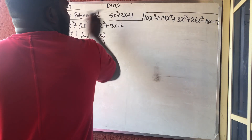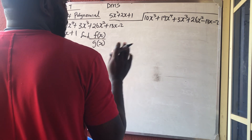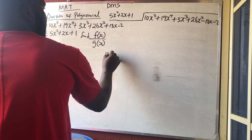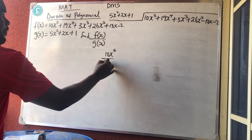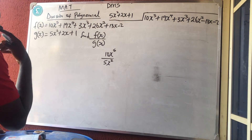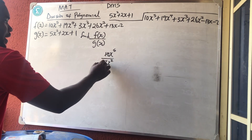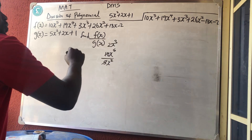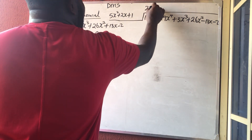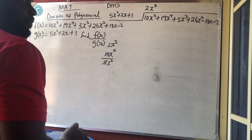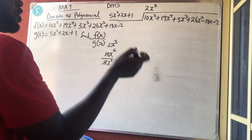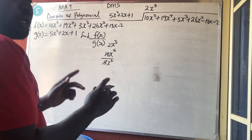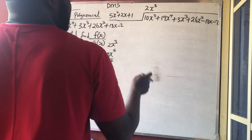The first thing we do is D — Division. Division simply means only the first term divides the first term, that's all. So 5x⁵ divided by 5x² — constant divides constant: 10 divided by 5 is 2, and remove x² from x⁵ gives x³. So my answer is 2x³. That is how to divide.